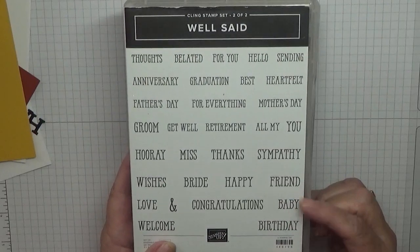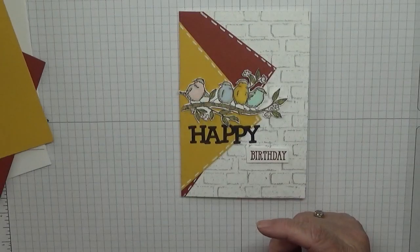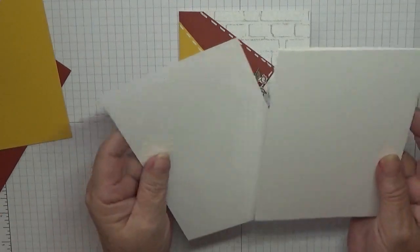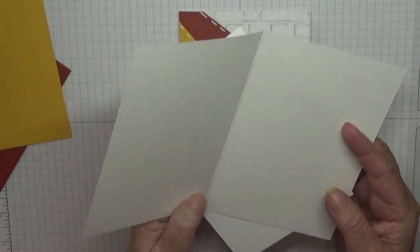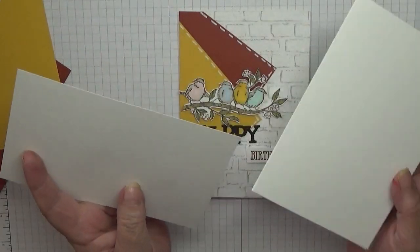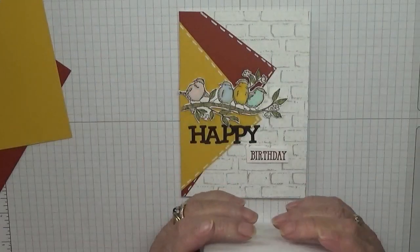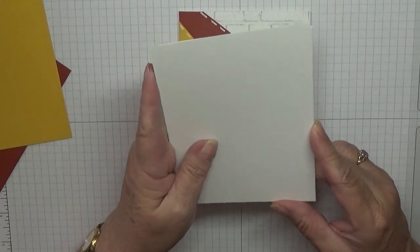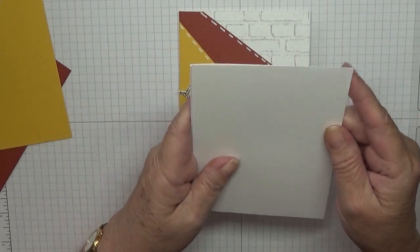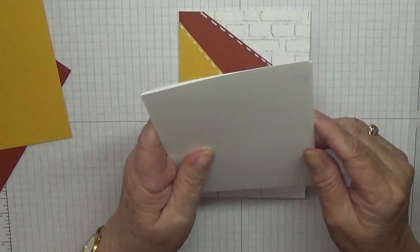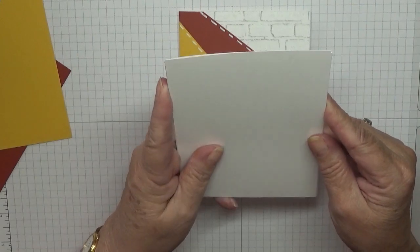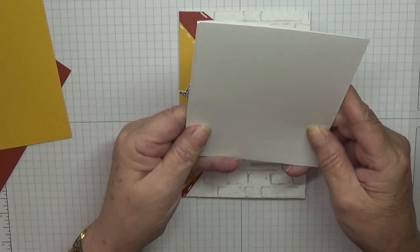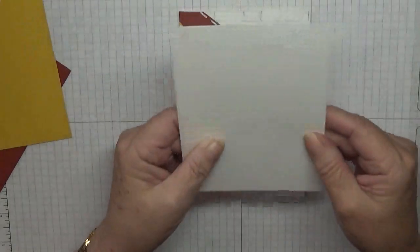So that's the only two stamp sets I've used. For the card I have a card base of eight and a quarter by five and seven eighth, scored at four and one eighth and folded in half. It's been burnished. I have a piece of card that's six by four and one eighth that covers the whole front and just needs trimming a bit.